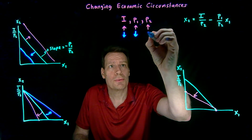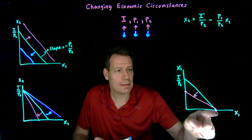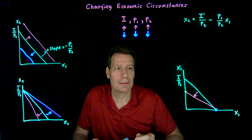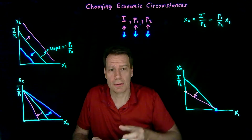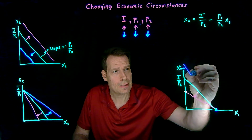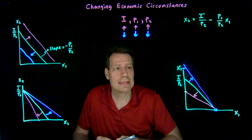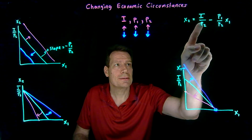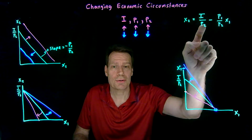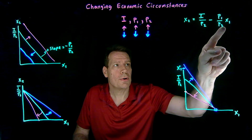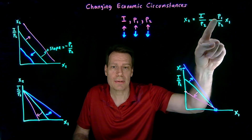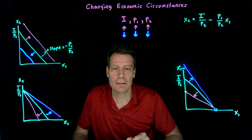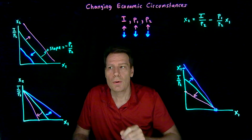Finally, what if the price of good 2 falls? If p2 falls, then if all you buy is good 1, it shouldn't affect you at all — that point stays the same. But if you buy only good 2 and the price of good 2 has fallen, you'll be able to buy more than before, so the intercept increases. We should get an outward rotation around the point on the horizontal axis, a steeper slope, and a higher intercept. When p2 falls, the denominator in the intercept falls, so that fraction increases, giving us the higher intercept. And in the slope, the denominator falls, so the absolute value increases, giving us the steeper slope. So by knowing the budget equation or thinking through it intuitively, we can see how changing economic circumstances will change the budget line.